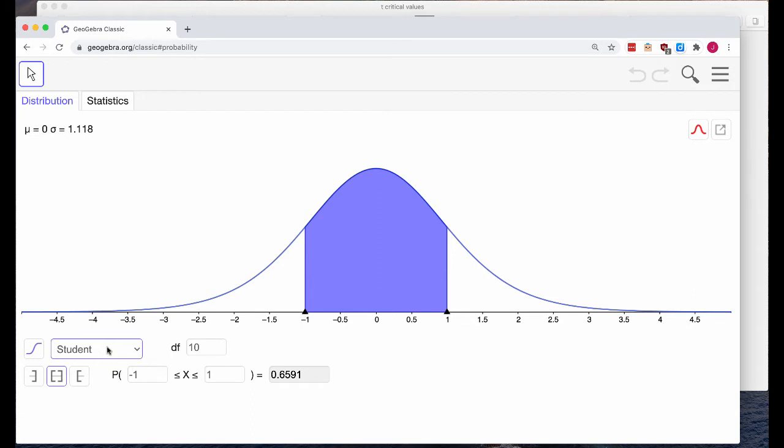So it's the student's T distribution. And in this particular graph, there are 10 degrees of freedom. So that's just the default. And then there are the three boxes where you can choose to have your area shaded to the left, the middle or the right. And then our probability statement where we can put in two end points to find the area between. And then in the lower right gray box, we're going to see the area between those two end points.